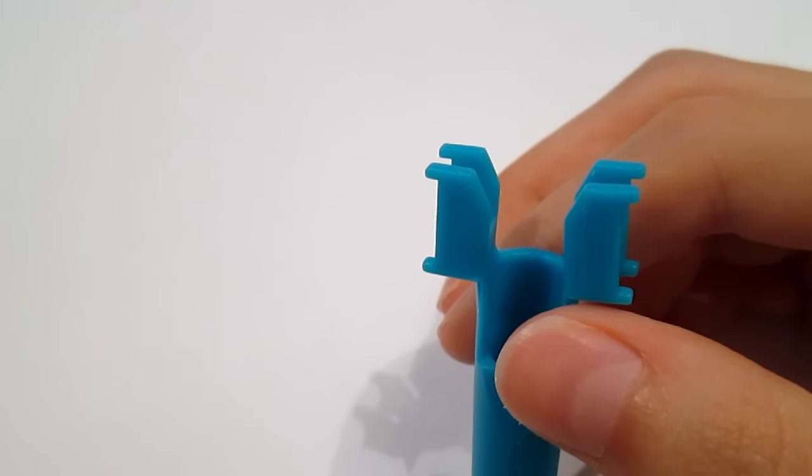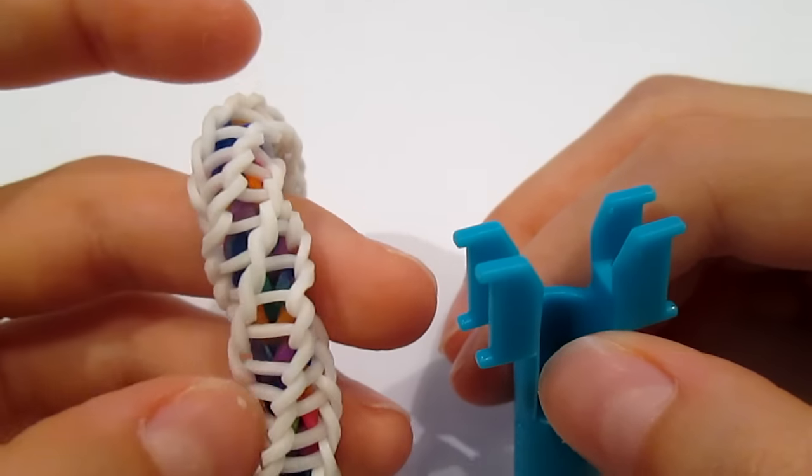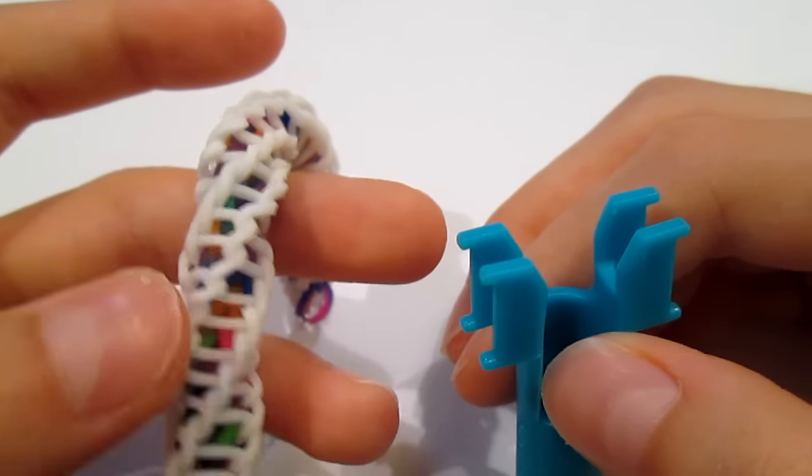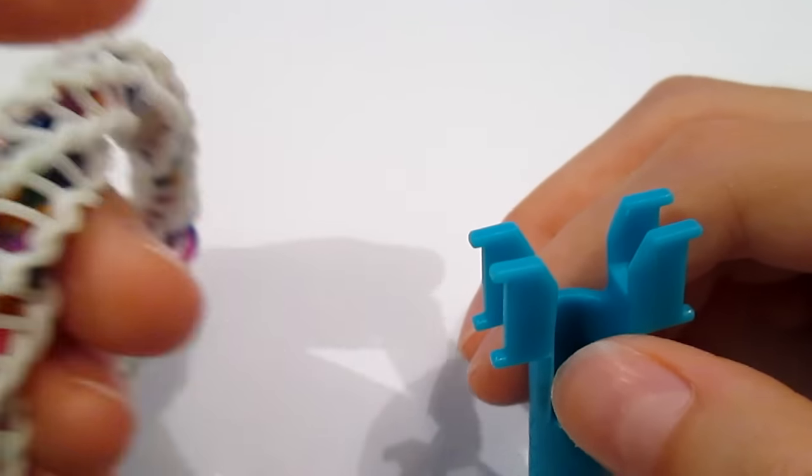So for this bracelet, you're going to need some bands for the center part of the bracelet, which is a fishtail, and then you'll need some bands for the outer part of the bracelet, which is like a single.